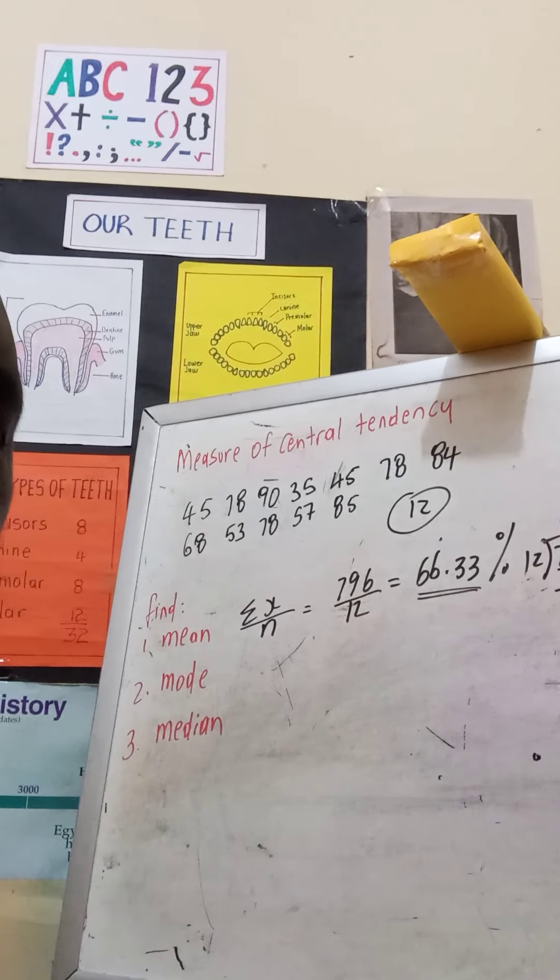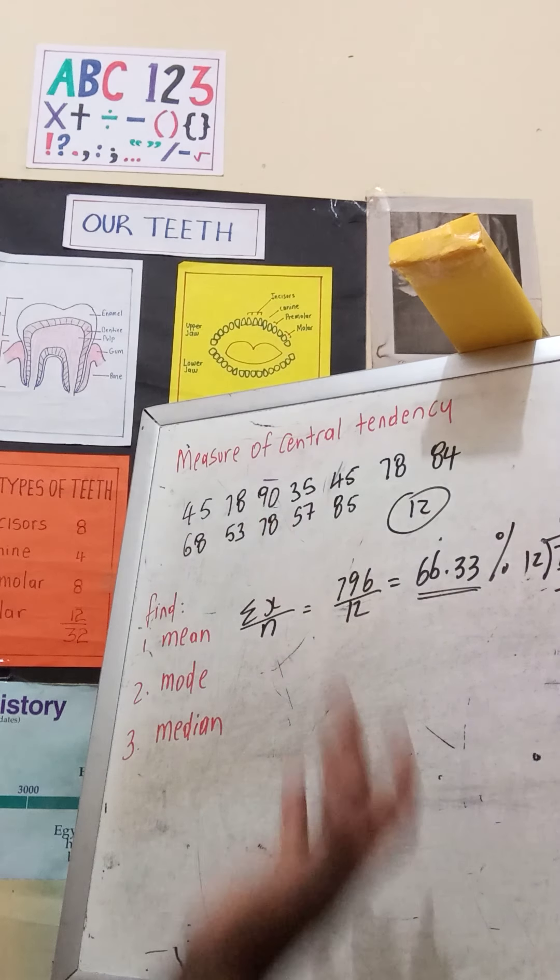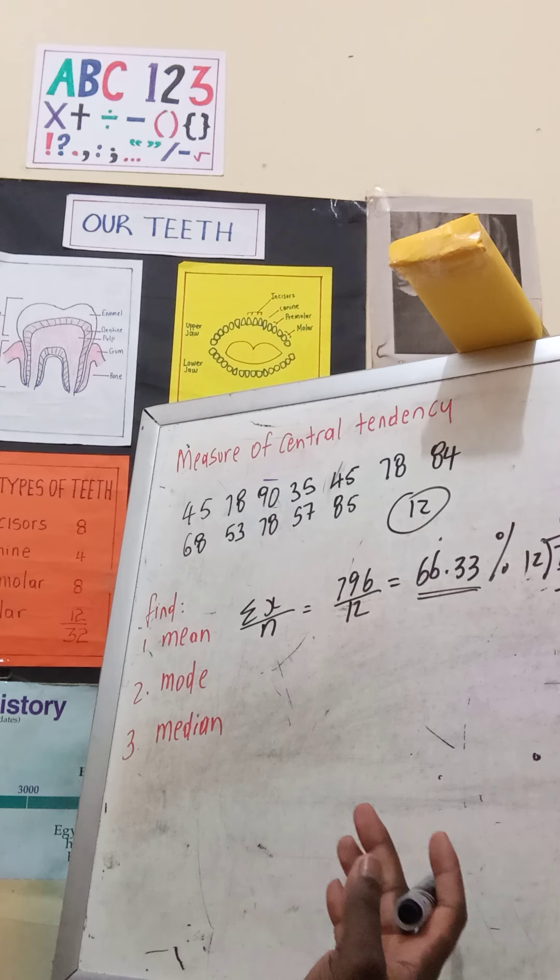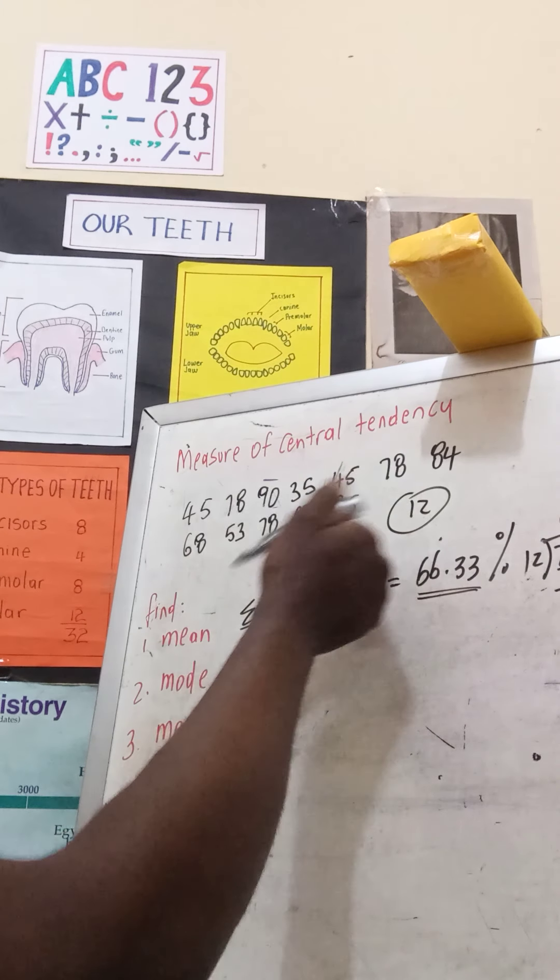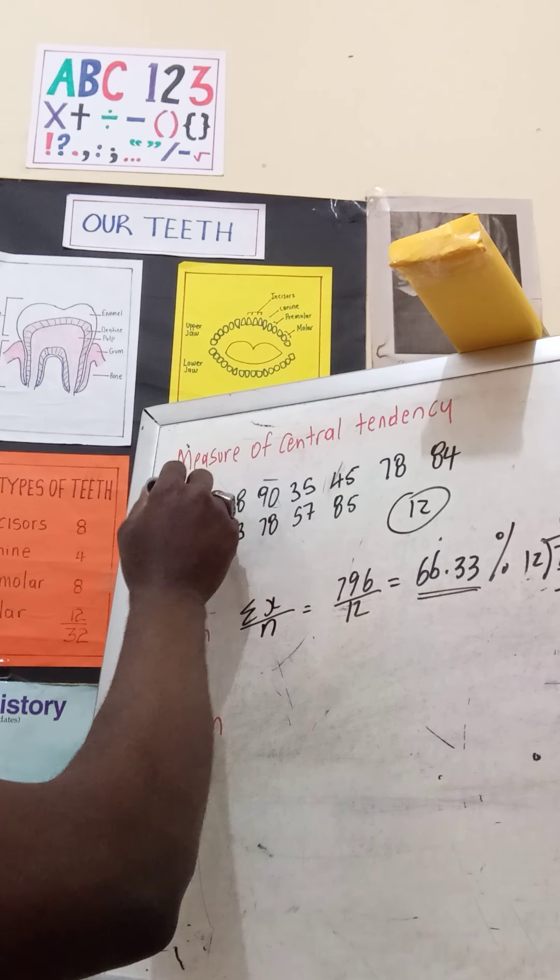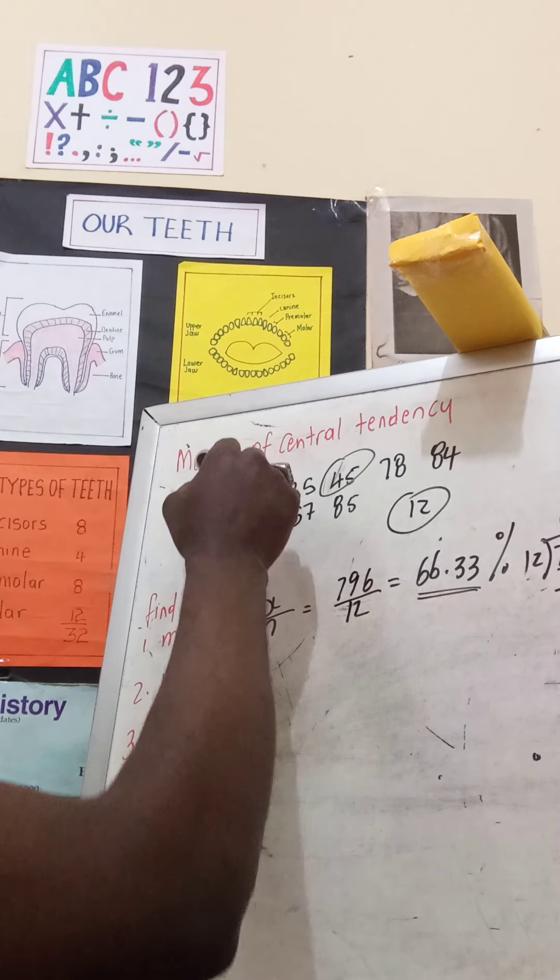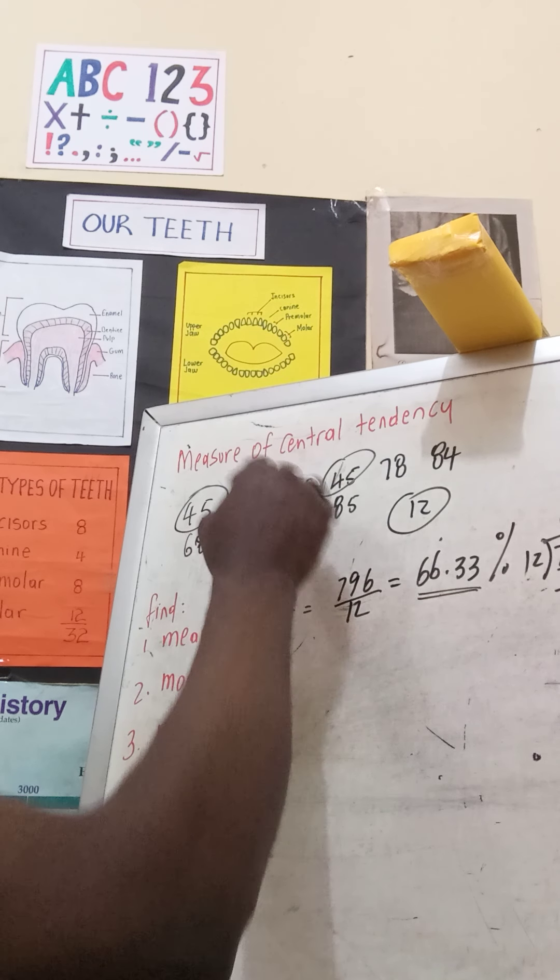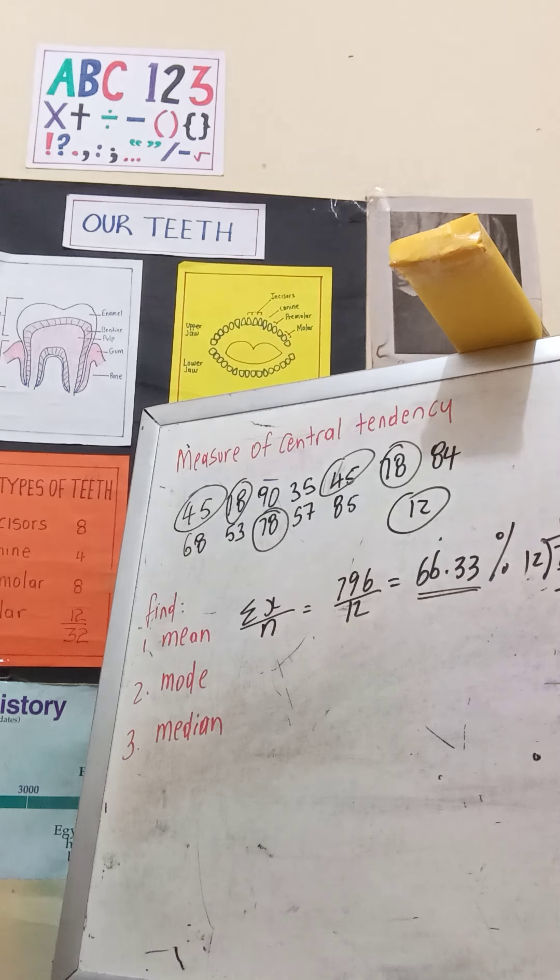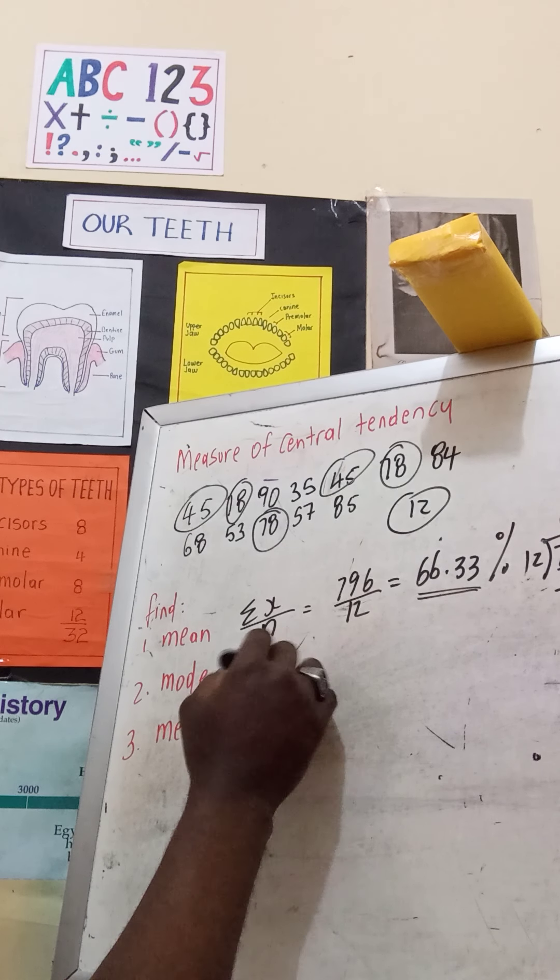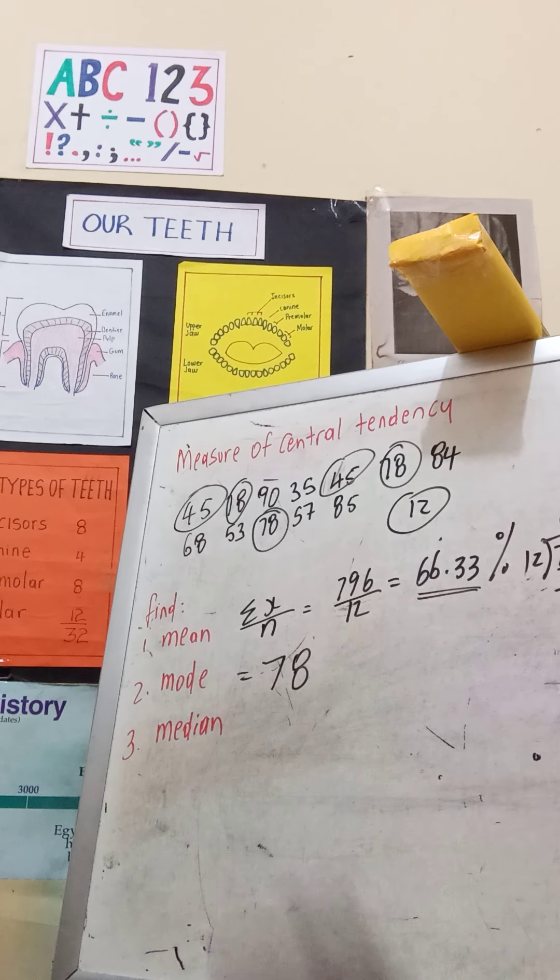To find the mode, you look for the one which occurs most frequently. How many times do we have 78? One, two, three. So our mode is 78 because it occurs most frequently - it occurs three times in all.